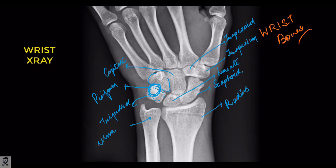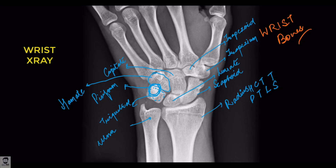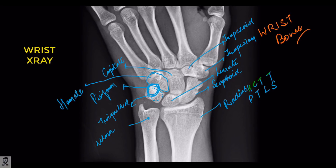The last bone next to the capitate, the one being marked here, is the hamate. There is a small hook of the hamate which is very important to identify. So to summarize: proximal row lateral to medial is scaphoid, lunate, triquetral, pisiform; and distal row lateral to medial is trapezium, trapezoid, capitate, and hamate. Hope you enjoyed the video.